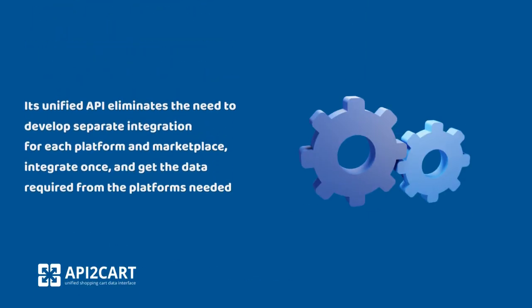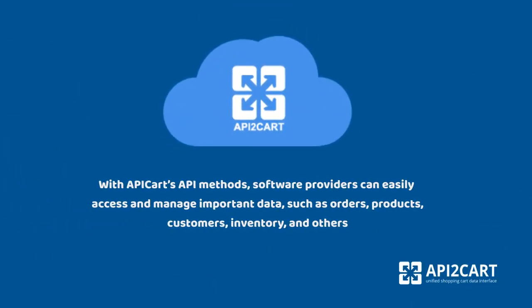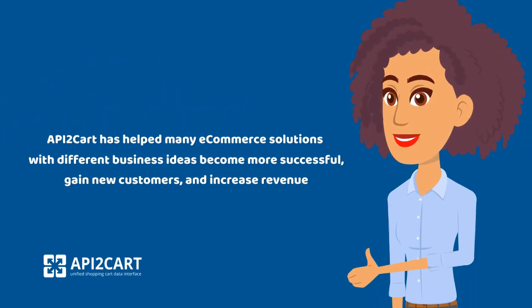Its unified API eliminates the need to develop separate integrations for each platform and marketplace — integrate once and get the data required from the platforms needed. With API2Cart's API methods, software providers can easily access and manage important data such as orders, products, customers, inventory, and others. API2Cart has helped many e-commerce solutions with different business ideas become more successful, gain new customers, and increase revenue.